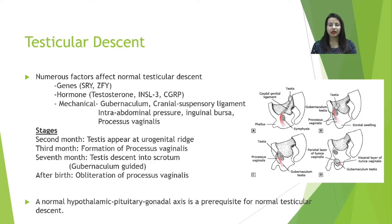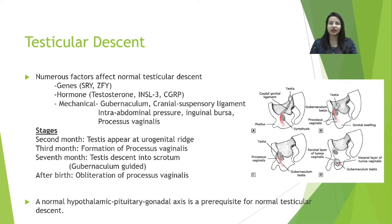Testicular descent is a multifactorial event controlled by various genes and hormones — testosterone, insulin-like factor 3 (INSL3), and calcitonin gene-related peptide (CGRP) — as well as mechanical factors like the gubernaculum, cranial suspensory ligament, intra-abdominal pressure, inguinal bursa, and processus vaginalis.